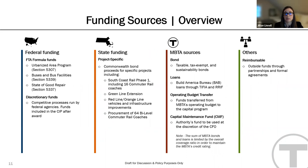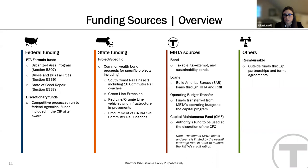Moving into how the MBTA funds our capital projects, this slide offers a high-level summary of the funding sources, broken down into four primary categories. Starting with federal funds, the MBTA receives formula funding through three programs administered by the Federal Transit Administration: the Urbanized Area Program (Section 5307), the Bus and Bus Facilities Program (Section 5339), and the State of Good Repair Program (Section 5337).